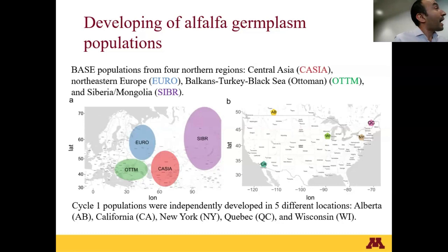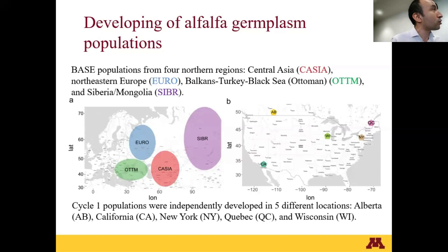Those four populations were used to generate four base populations, and the four base populations were then used to generate the cycle one populations by five different breeders in five different locations, shown in panel B of the figure. The locations in North America include California, Alberta (Canada), Quebec (Canada), Wisconsin, and New York.